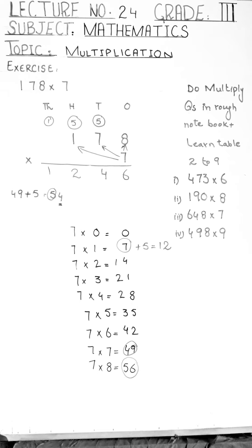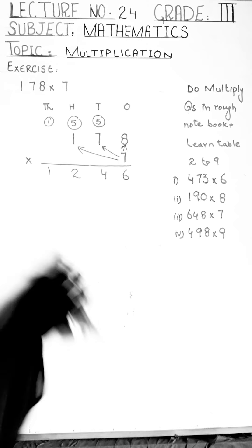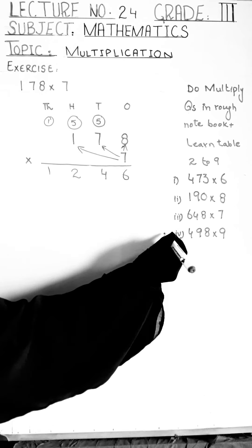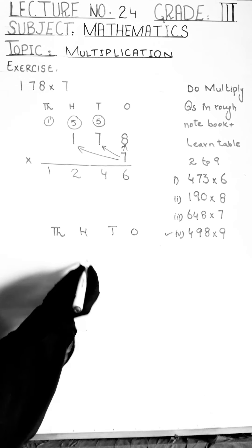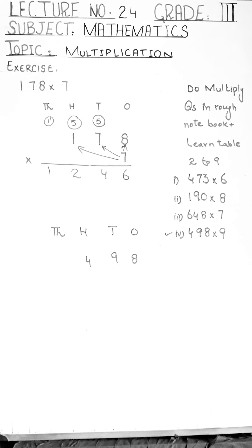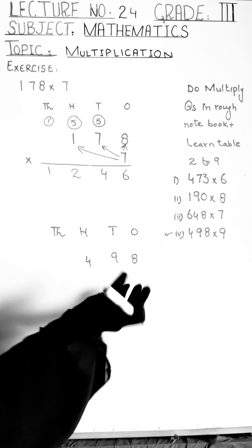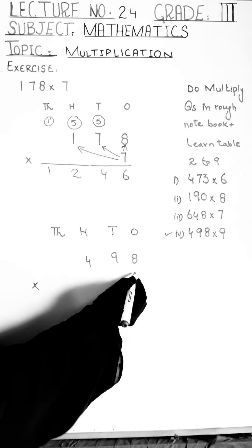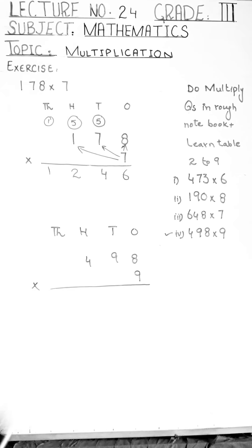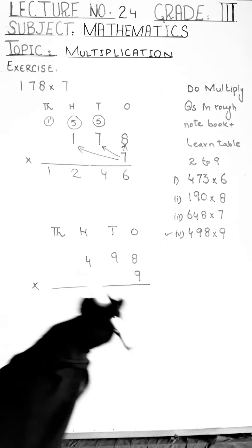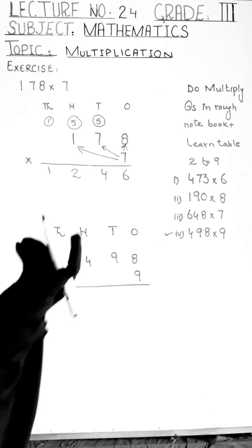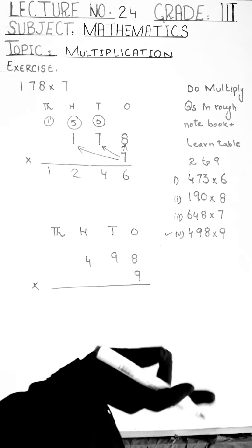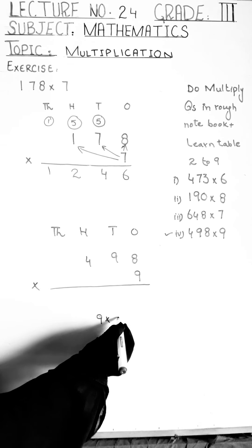Next question, students. I will solve the next question for you. Look at this question — we solve this one, and you people follow the same method in your rough notebook. The question is four hundred ninety-eight multiplied by nine. Any question can be given; it's not important that the same digits appear. Concentrate on the method and the tables, not the digits. These digits are not repeated in the exam. We need the table of nine. We write the table up to the greatest number in the question, which is nine.